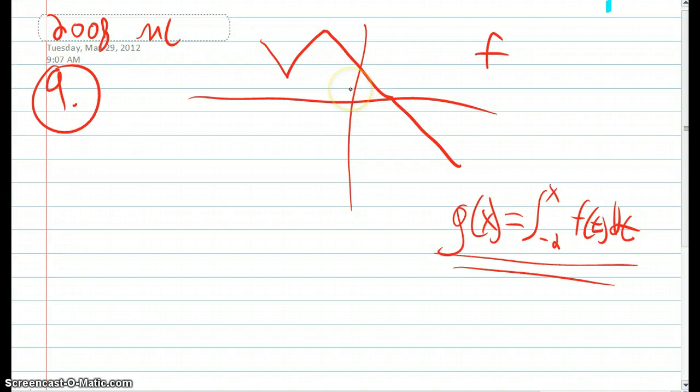With this being 1, 2, 0 here, negative 1, negative 2, negative 3, and we have this graph.